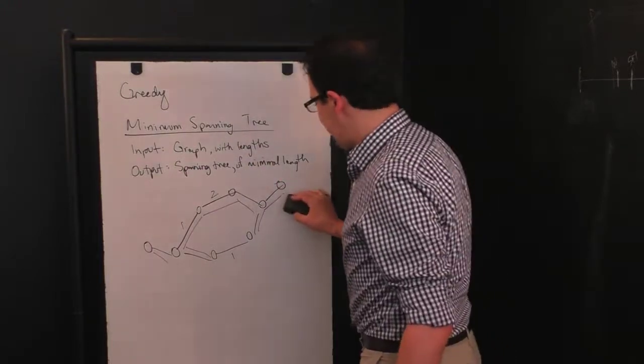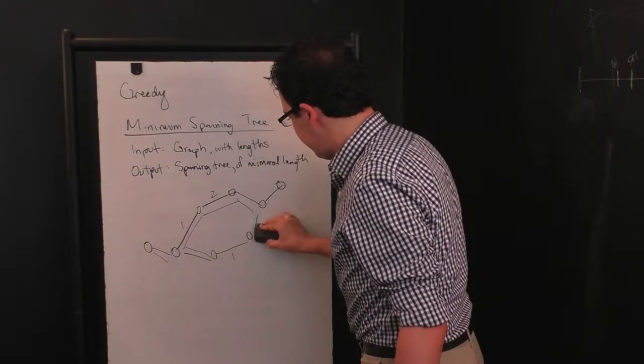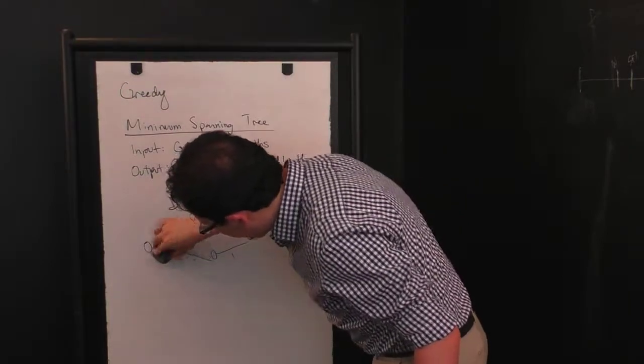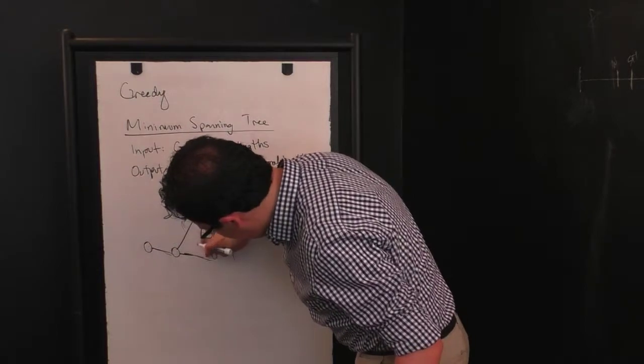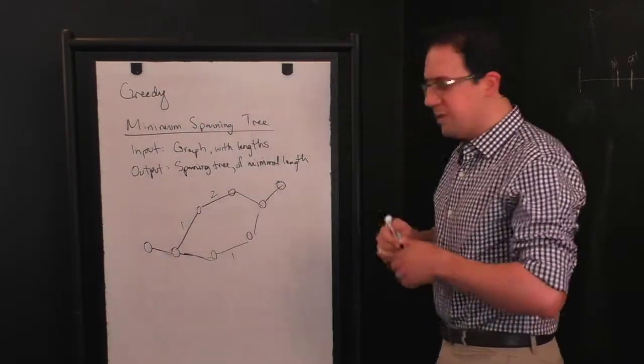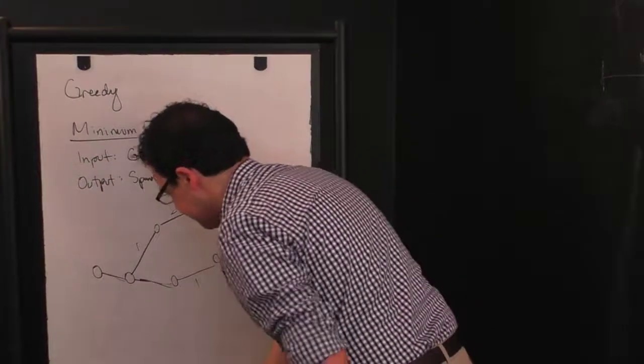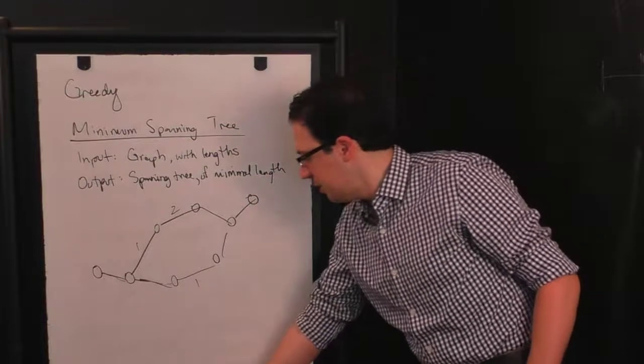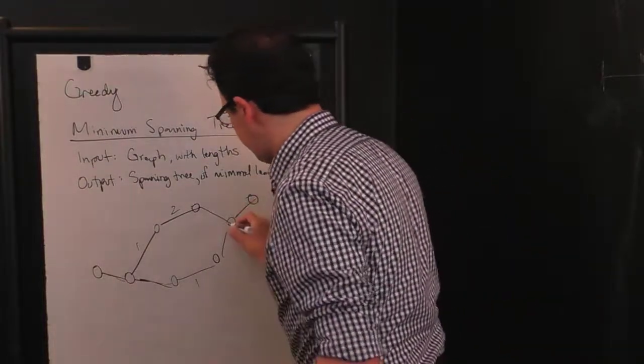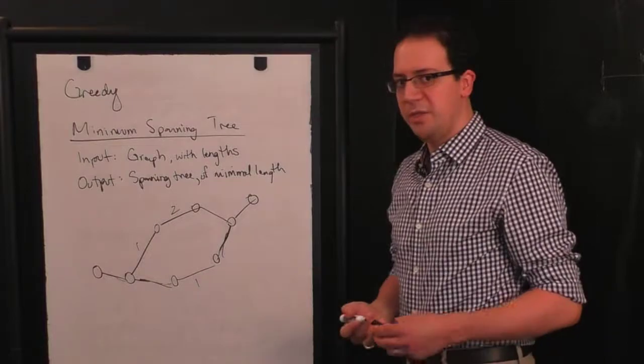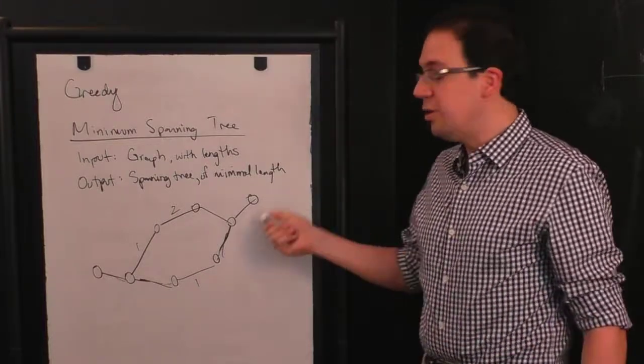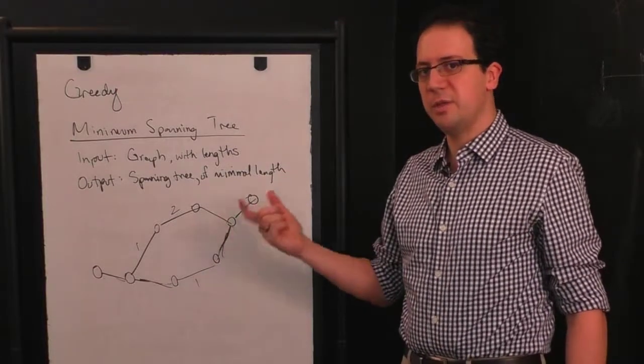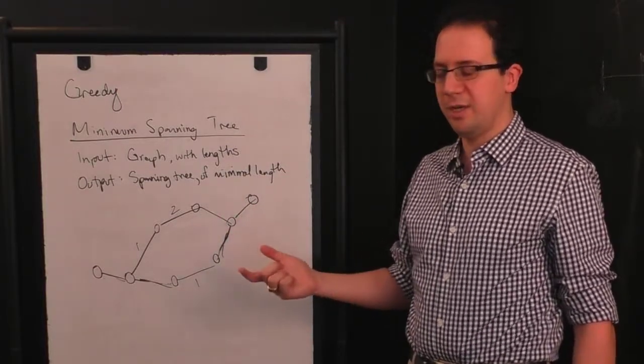Okay, so how are we going to find a minimal spanning tree? Well, the answer is, of course, we're going to do it greedily. All right, so we start out, this is our graph. We haven't picked any of the edges yet. And what we're going to do is maintain a list of which vertices are connected to which other vertices by purple edges. When we start out, none of the vertices are going to be connected.